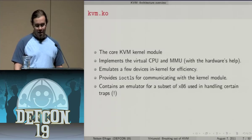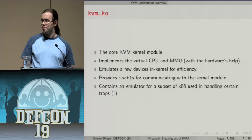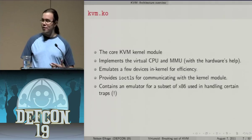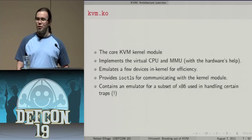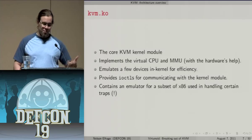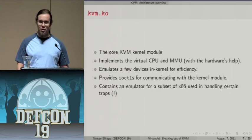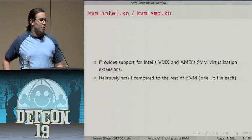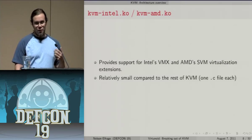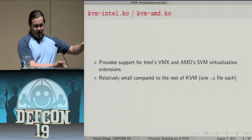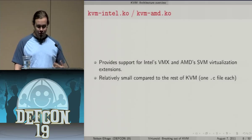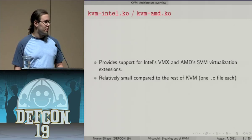One interesting bit of trivia about KVM.ko: despite using hardware virtualization extensions where the virtual machine is executed directly by the processor in a non-root context, KVM still contains an entire x86 emulator in the kernel module for handling certain rare traps. From a code complexity and attack surface perspective, that's worth knowing. KVM Intel and KVM AMD are the other kernel components — glue code for the hardware virtualization extensions, relatively small at around 4,000 lines each.